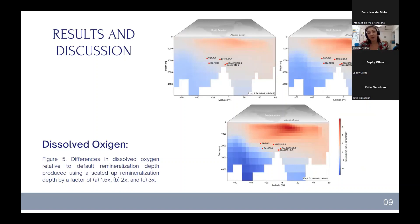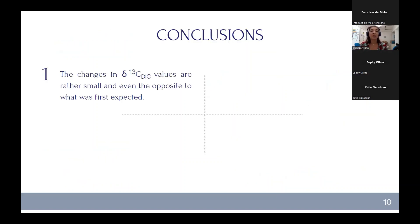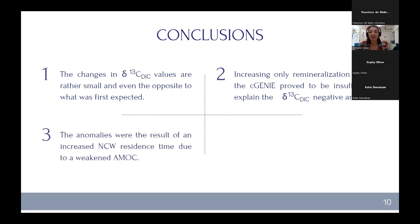The conclusions until this part of the work were that changes in carbon-13 values are rather small and even the opposite of what we first expected. Also, increasing only remineralization depth in the cGENIE proved to be insufficient to explain those negative anomalies. We also think that the anomalies were the results of an increased Northern component water residence time due to a weakened AMOC, corroborating with previous work.